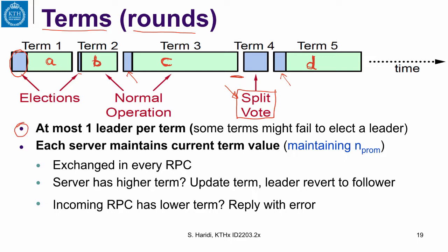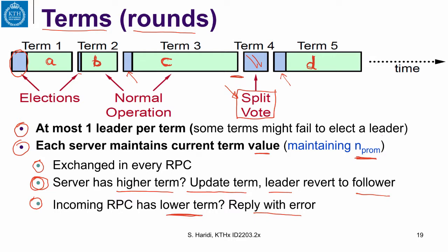There is at most one leader per term. Some terms might fail to elect a leader, as we have seen. Each server maintains its current term — comparable to maintaining the promise round number in Paxos — and this term is exchanged in every RPC. If a server discovers another server with a higher term, it updates its term and the leader reverts to become a follower. If an incoming RPC has a lower term, it replies with an error, meaning some messages arrived after an arbitrary delay when the server had already moved to a higher term.